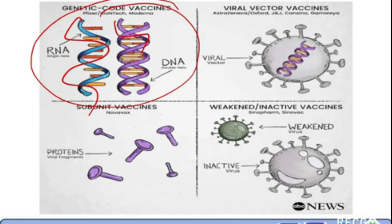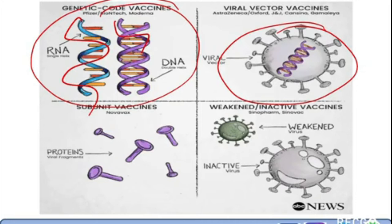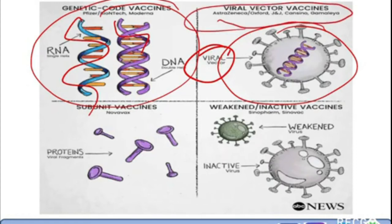There is also the viral vector vaccine. In viral vector vaccines, a vector is selected — a virus that is congenial to the human body — and it is injected with the COVID material. These viral vector vaccines include AstraZeneca, Oxford, J&J, CanSino, and Gamaleya. Genetic code vaccines, on the other hand, include Pfizer-BioNTech and Moderna.